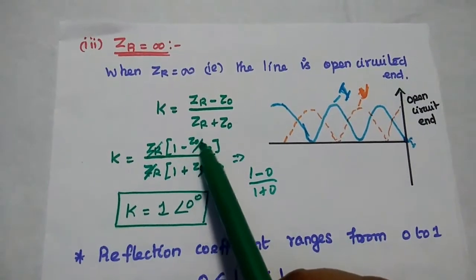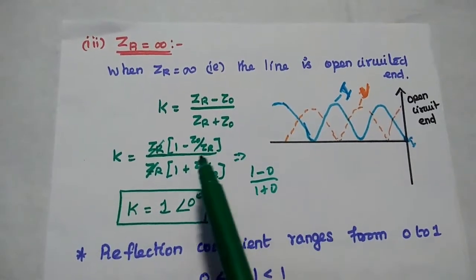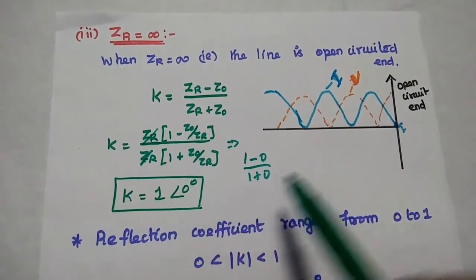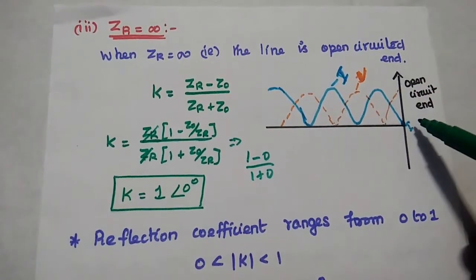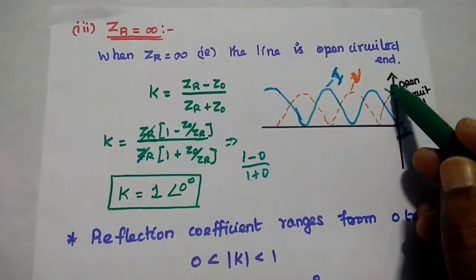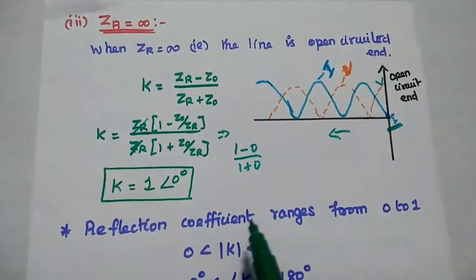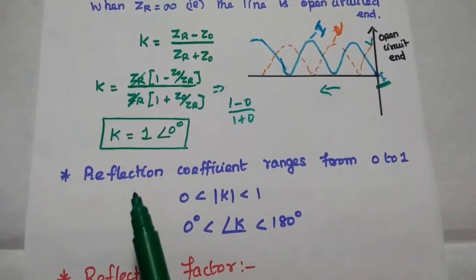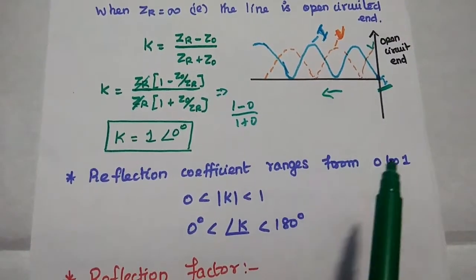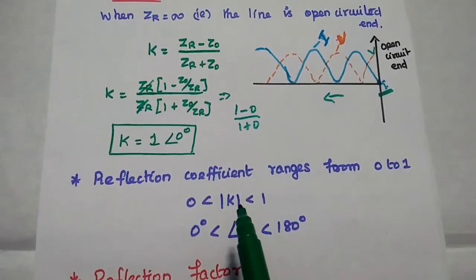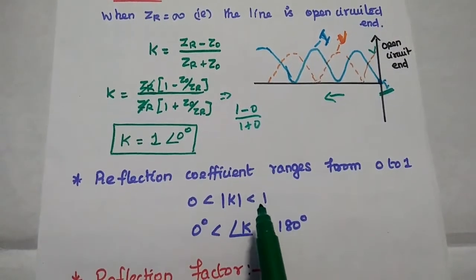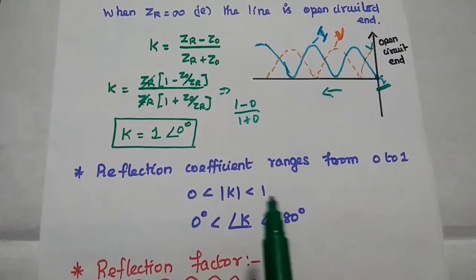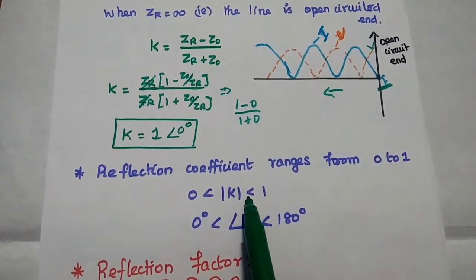1 minus Z naught by infinite gives 0, divided by 1 plus 0. So K value is equal to 1 with phase 0 degree. In this diagram, at this open circuited end, the current is minimum and voltage is maximum. This is the reflected wave from this open circuited end. From this analysis, we come to know that the reflection coefficient ranges from 0 to 1. That is, the magnitude value is greater than or equal to 0 and less than or equal to 1, and its phase value is from 0 degree to 180 degree.